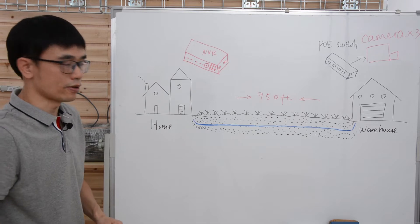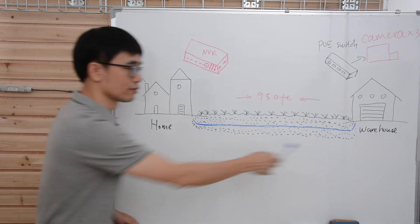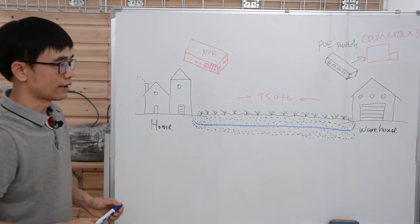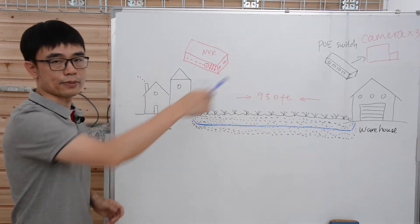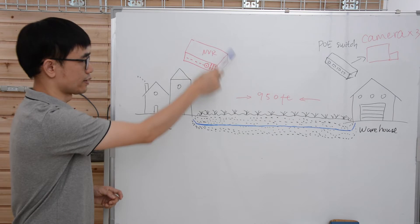The Cat 6 Ethernet cable is being buried under the ground from the home to the warehouse. The customer also has a PoE switch set up at the warehouse so he can power 3 IP cameras there, and he just placed the NVR at home.